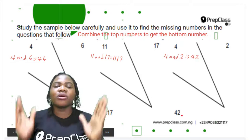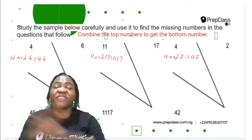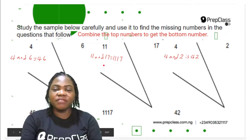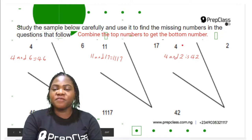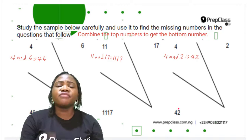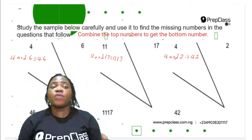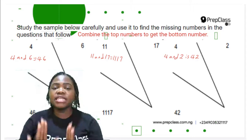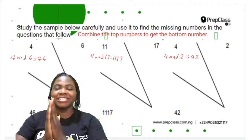All we have to do is combine the top numbers to get the bottom numbers — as simple as that. To get the bottom numbers, combine the two top numbers. So 4 and 6 combined is 46; 11 and 17 combined is 1117; and 4 and 2 combined is 42. It's very important that you check if it works with all the samples. When you've checked sample A and it works, don't just go ahead — it might be wrong. You need to check each of the samples to see if your logic is correct. We've established that to get the bottom number, all you have to do is combine the top numbers.